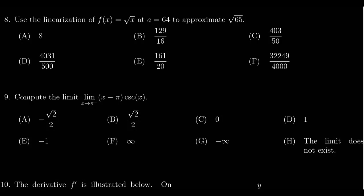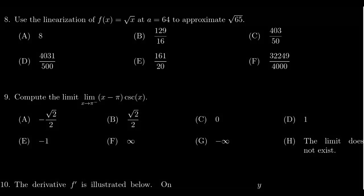In this video, we provide the solution to question number 8 for a practice exam number 4 for Math 1210. We're asked to use the linearization of the function f(x) = √x at the point a = 64 to approximate √65.